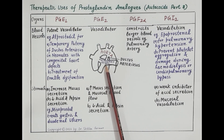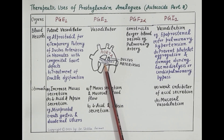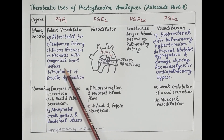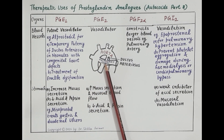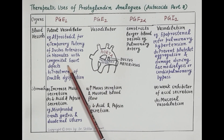The ductus arteriosus remains open in the fetus so as to bypass the lungs, but as soon as the baby is born it closes. In neonates with a congenital heart defect, alprostadil keeps the ductus arteriosus open until surgery can be performed to correct the congenital abnormality.